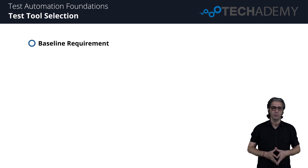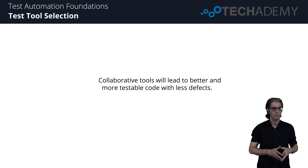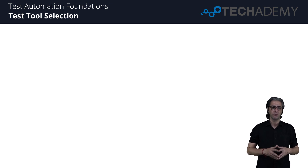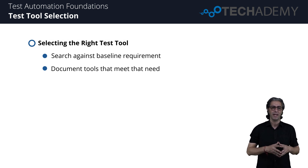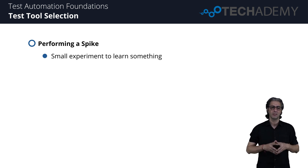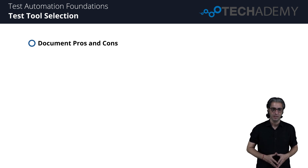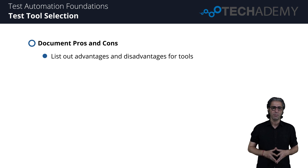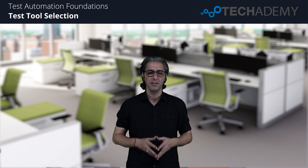We recommend starting with a baseline requirement of what the test tools must support: first, the type of test to be implemented; second, the language the tests will be written in. For example, a JavaScript unit testing framework. We also recommend finding tools that promote cross-functional collaboration among testers, developers, and business team members. Use the baseline criteria to search for relevant test tools and write them down. Then try spikes — small experiments using selected tools — to learn technical details and come up with a more informed judgment. List advantages and disadvantages and bring this back to the team for comparison.